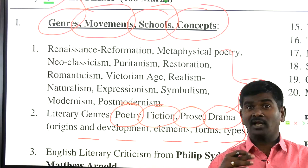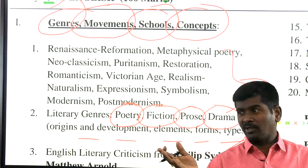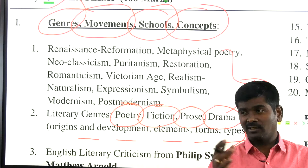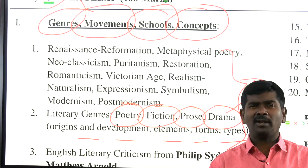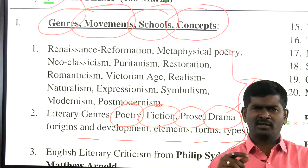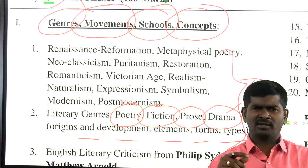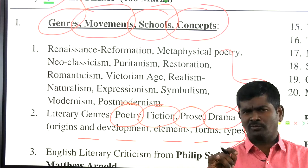What is the origin of epic, origin of ode? Ode is popularized by Pindar, and popularized during English literature by Cowley. 'Tintern Abbey' written by William Wordsworth is an example for a regular ode. What is the first ode in English literature? 'To the Immortal Memory and Friendship of that Noble Pair, Sir Lucius Cary and Sir H. Morison' written by Ben Jonson is considered to be the first ode. What is the regular ode, what is the Horatian ode?